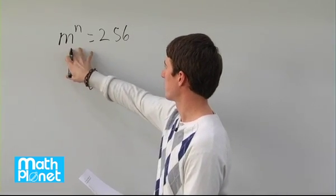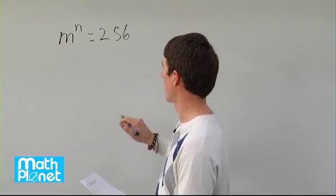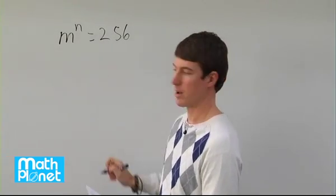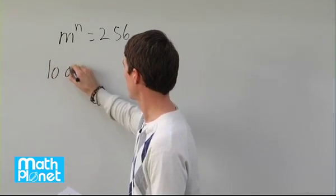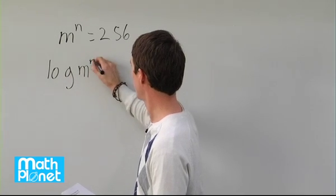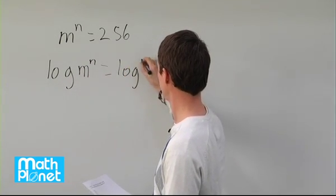To get this in terms of m on the other side, we need to take the logarithm of both sides to get this n down front. Logarithm of m^n equals log 256.